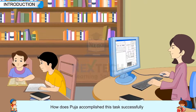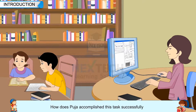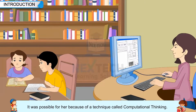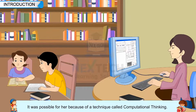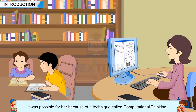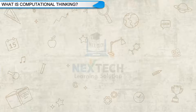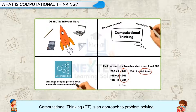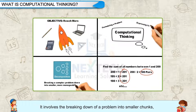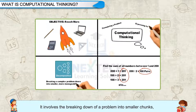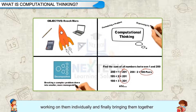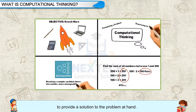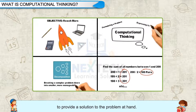How did Pooja accomplish this task successfully, even though she had never planned before? It was possible for her because of a technique called Computational Thinking. Computational Thinking is an approach to problem solving. It involves breaking down a problem into smaller chunks, working on them individually, and finally bringing them together to provide a solution to the problem at hand.